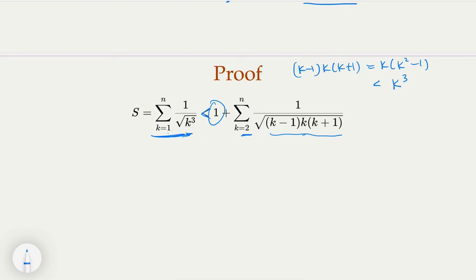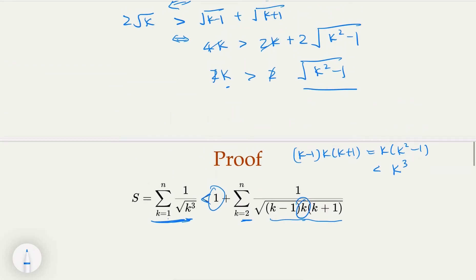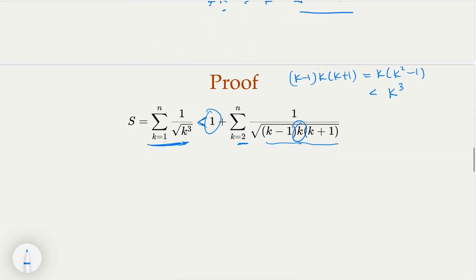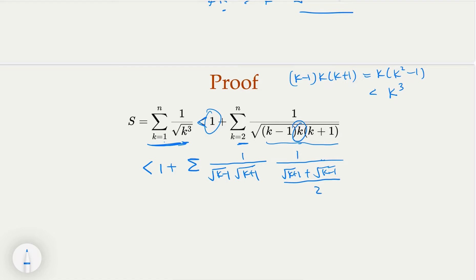Now we use the technique again. There's a square root of k in the denominator. I'm replacing it with the average, which is the square root of k plus 1 plus the square root of k minus 1, divided by 2. Since I'm replacing with something smaller in the denominator, the whole thing gets bigger — I'm further expanding it.